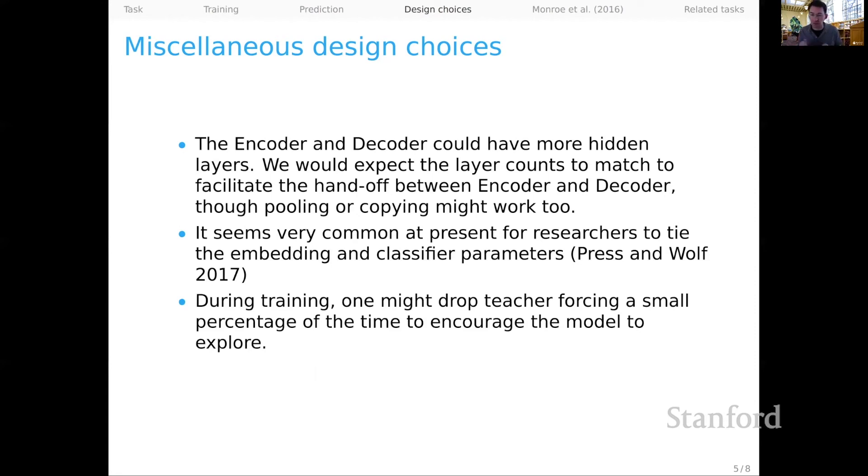And finally, during training, we might drop that teacher forcing assumption, which would mean that in a small percentage of cases, we would allow the model to just proceed as though its predicted token was the correct token for the next time step, even if that was a faulty assumption on the idea that that might help the model explore a wider range of the space and inject its generations with some helpful diversity.